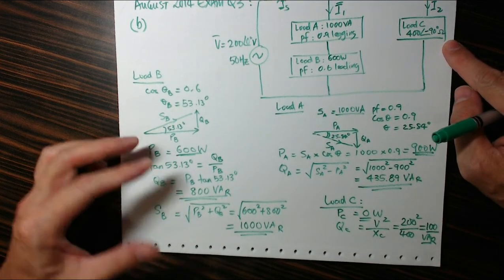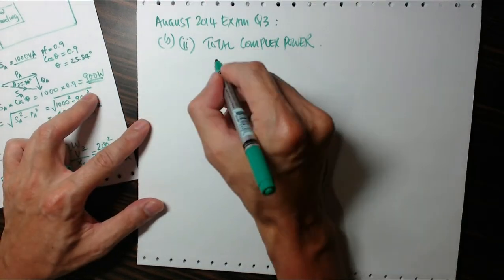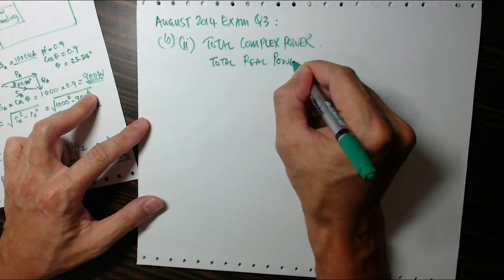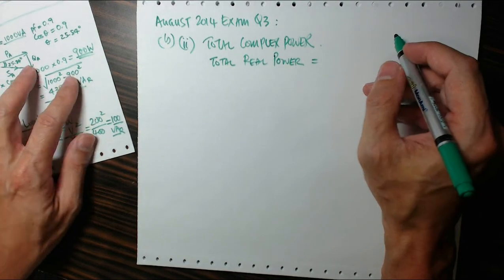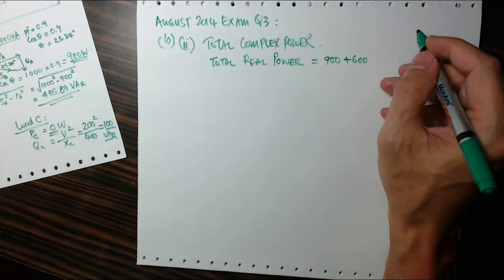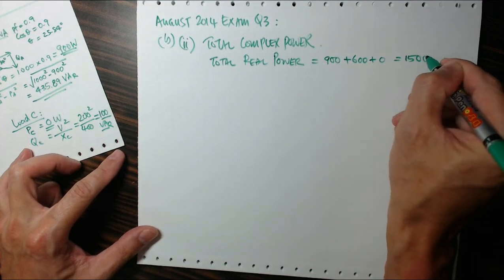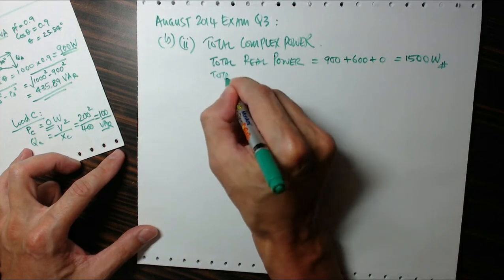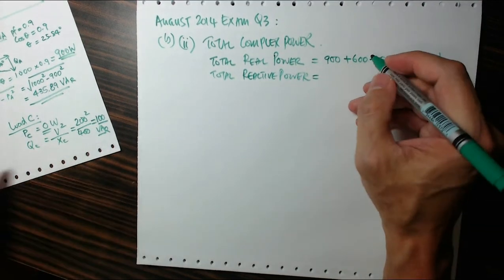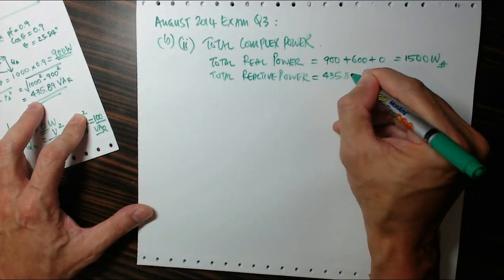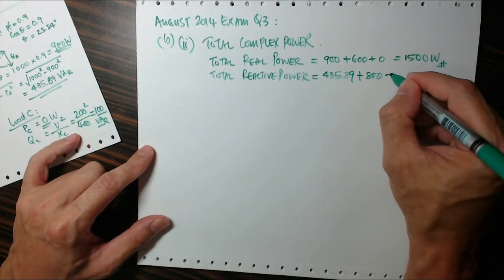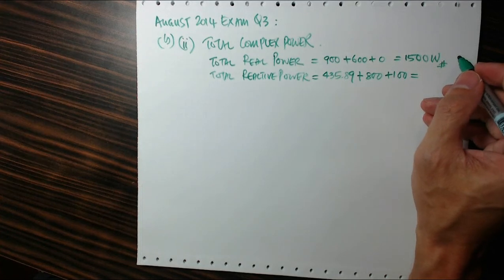Right, so we have the final load C, real power is zero watts, the reactive power is 100 VAR. In other words, this is a capacitor. Next we want to determine the total complex power. So we can write, the total real power is equal to just add up all the real power components. So load A real power, that was 900 watts, load B real power 600, and load C was zero, so total is 1500 watts.